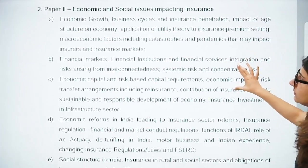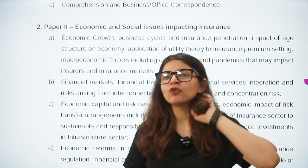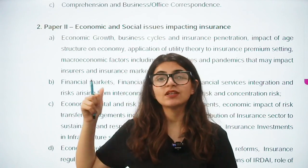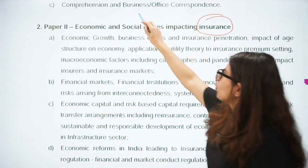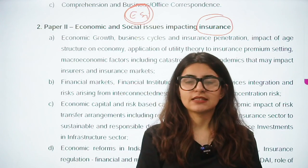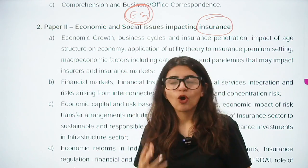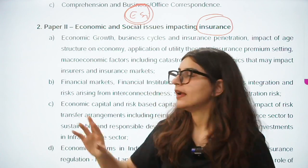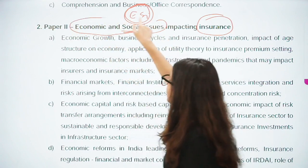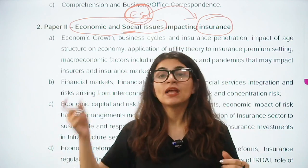Paper 2 is about economic and social issues impacting insurance. ESI topics are already there in RBI, but what is different here is the insurance angle. So all the ESI topics we already prepare — schemes, social security, union budget, economic survey — remain the same, but now we have to look at them through the lens of insurance, connecting economic and social issues with the insurance sector.